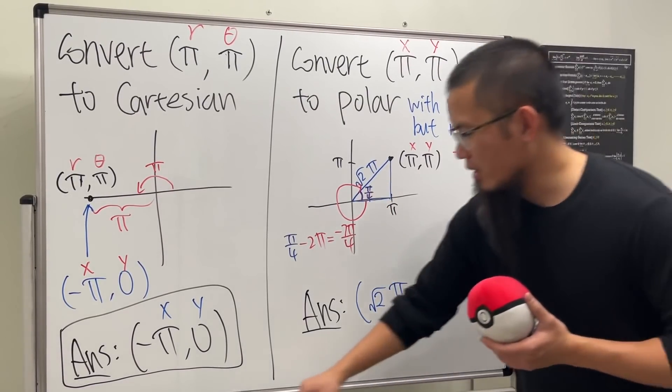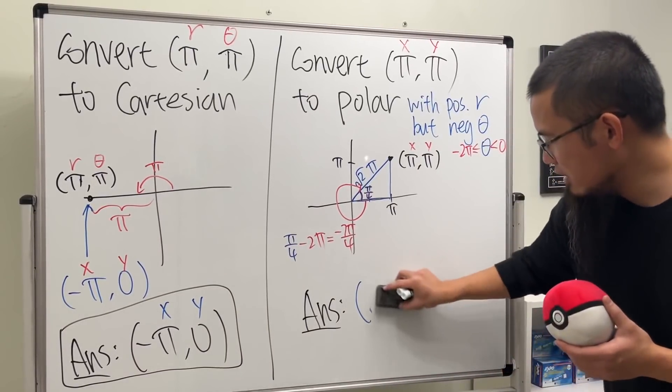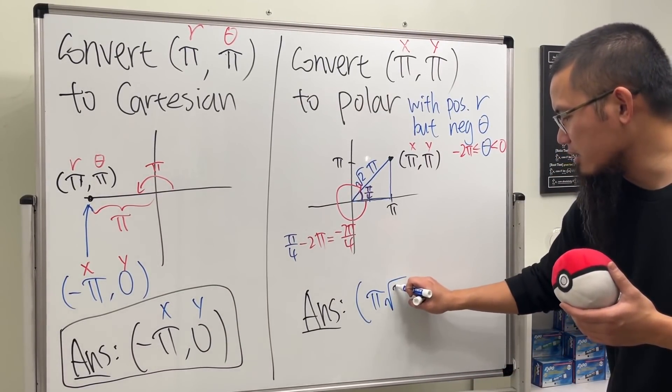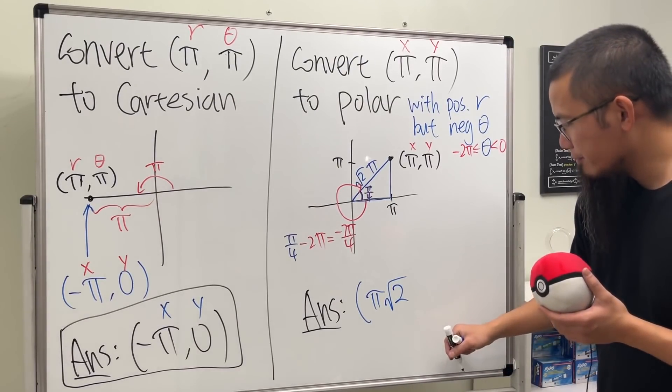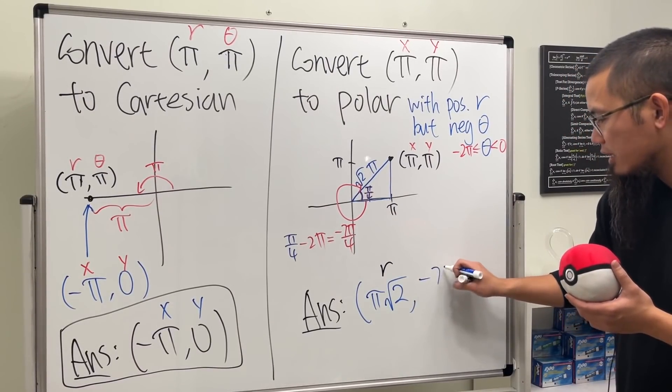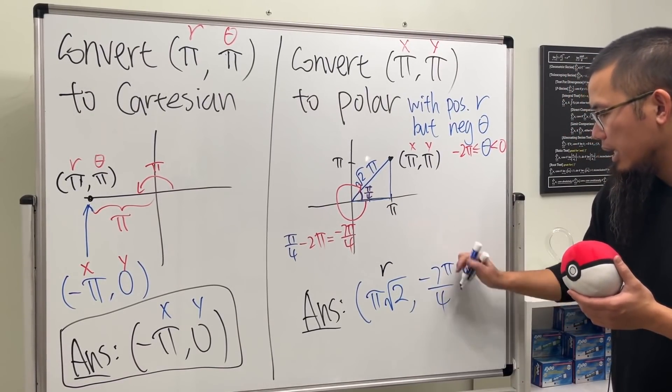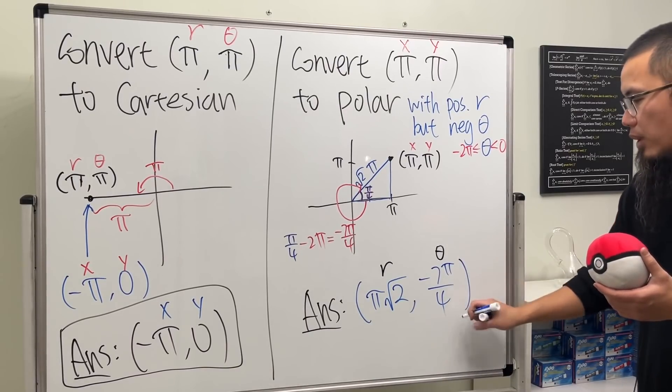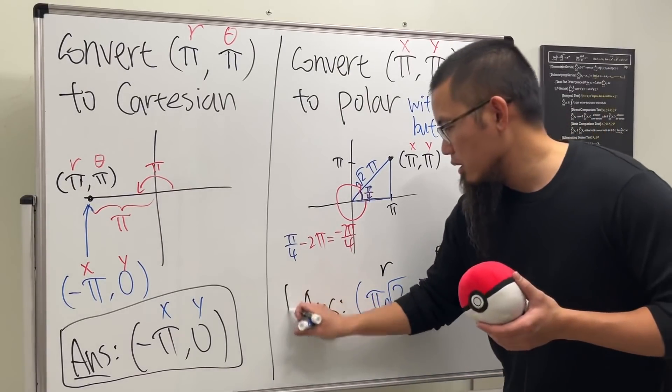Let me just write down the answer here. Answer: we can also have r is √2 times π. Maybe you want to put the π in the front that way it's easier to see that the π is not in the square root. So this is the r, and the angle theta that we want is -7π/4. The reason that we use this one is because I have this condition. Because otherwise, you can have infinitely many different answers.